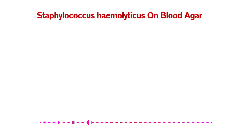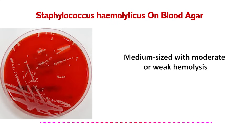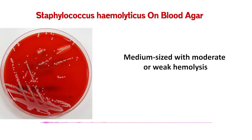What about S. haemolyticus? The name itself is a hint, and it's another key exception to that non-hemolytic rule. S. haemolyticus colonies are typically medium-sized and they can show some beta hemolysis — actual hemolysis. It's often described as moderate or weak hemolysis, maybe not as strong as Strep pyogenes, but if you see any clearing — even faint — around a staph colony, S. haemolyticus needs to be on your radar.